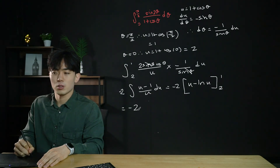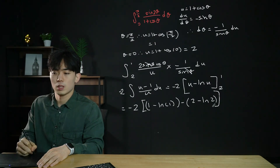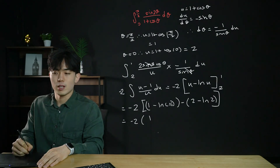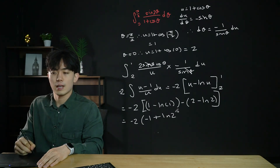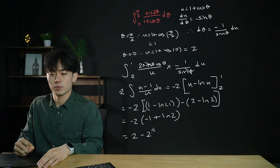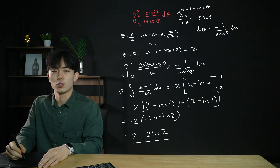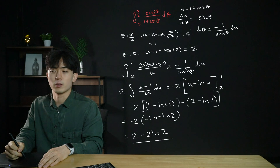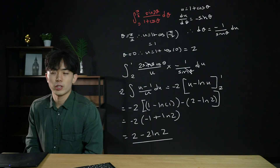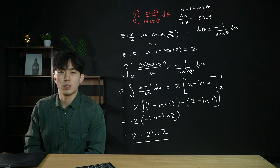Evaluating: minus 2 times [(1 minus ln 1) minus (2 minus ln 2)]. Since ln 1 = 0, this is minus 2 times [1 minus 2 plus ln 2] = minus 2 times [minus 1 plus ln 2] = 2 minus 2 ln 2. The main goal is to reduce the fraction to one term in the denominator, set u equal to that whole denominator, and don't forget to change the limits. That's all the trickier integral questions for A-level maths.